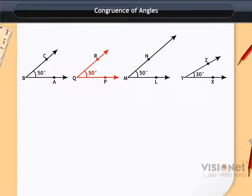So we say that angle ABC is congruent to angle PQR. Similarly we say that angle LMN is congruent to angle ABC.